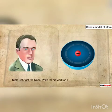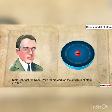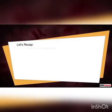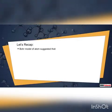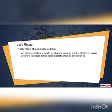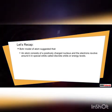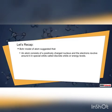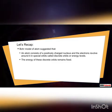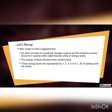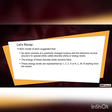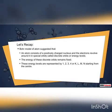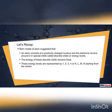For his work on the structure of the atom, Niels Bohr received the Nobel Prize in 1922. To recap: Bohr's model of the atom suggested that an atom consists of a positively charged nucleus and electrons revolve around it in special orbits called discrete orbits or energy levels. The energy of these discrete orbits remains fixed. These energy levels are represented by 1, 2, 3, 4 or K, L, M, N starting from the center.